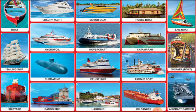A harbour is the place where ships stay. Oil tankers are special ships which carry oil only. There are also oil tankers in the sea used to drill under the ground and find oil. An aircraft carrier is a warship that has aircraft on it as well.